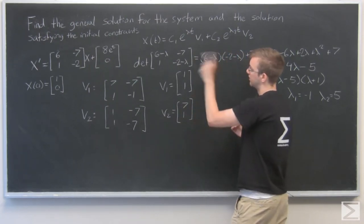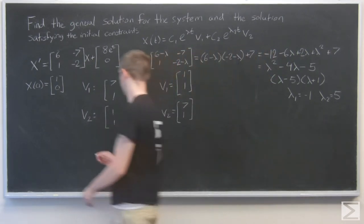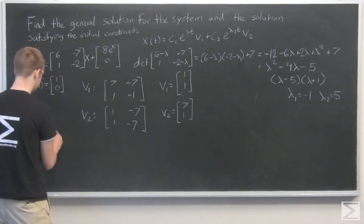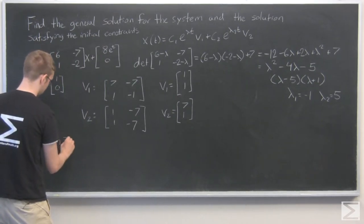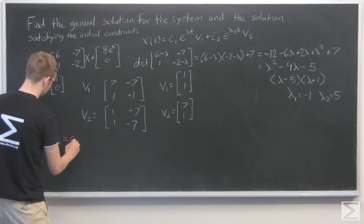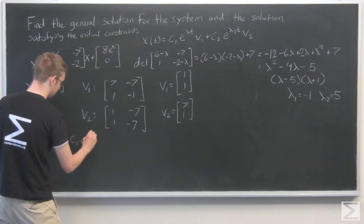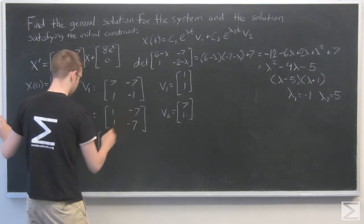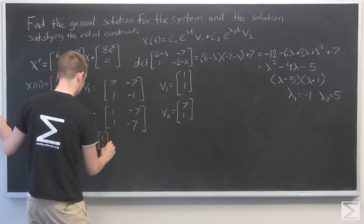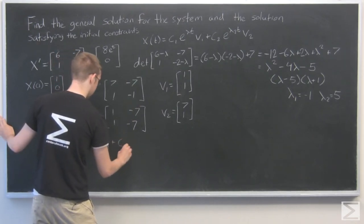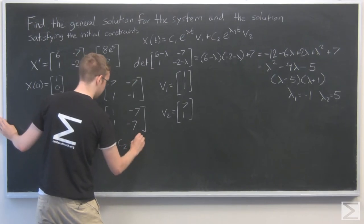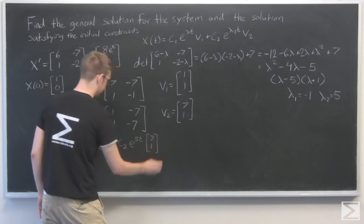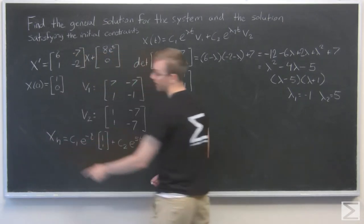Now we can write our homogeneous solution. That's xh. We don't have the general solution yet. That's C1*e^(-t) times [1, 1] plus C2*e^(5t) times [7, 1]. We have xh.